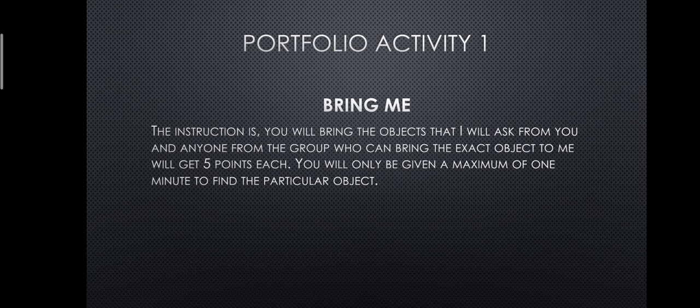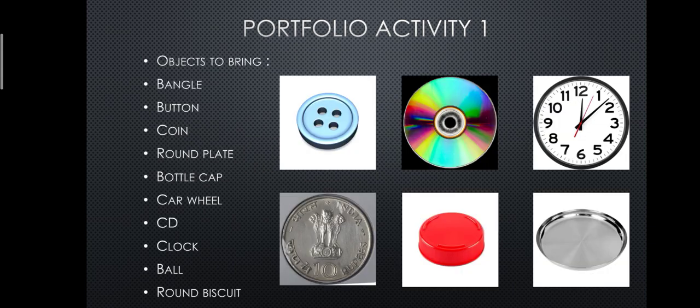The instruction is: 'You will bring the objects that I ask from you. Anyone from the group who brings the exact object will get five points each. You will only be given a maximum of one minute to find the particular object.' The children are asked to bring objects like bangle, button, coin, round plate, bottle cap, car wheel, CD, clock, ball, and round biscuits. If a child brings the correct object, they get the points.